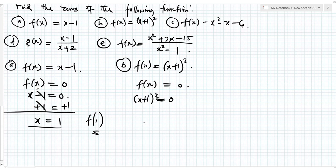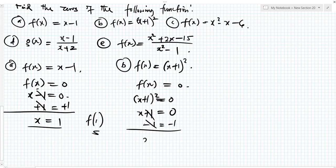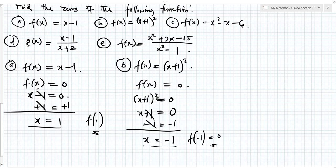If you add minus 1 to both sides, you will be left with x plus 1. The square root of 0 is still 0. So if you add minus 1 to both sides, this will cancel. You are left with x equal to minus 1. So f of minus 1 is the zero of this function — this function is 0 at x equal to minus 1.